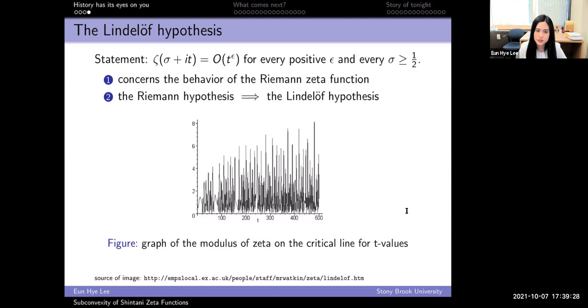So far we've seen what the subconvexity problem is and the known results. But I still haven't told you what the goal is. As I promised earlier, here is the end goal: the Lindelöf hypothesis. We want to get the constant 1/4 to be zero. The importance of this hypothesis comes from the fact that it concerns the behavior of the Riemann zeta function itself, and the Riemann hypothesis implies the Lindelöf hypothesis. As a believer of the Riemann hypothesis, I strongly hope that this is true, and the data shown in this graph seems to support it.